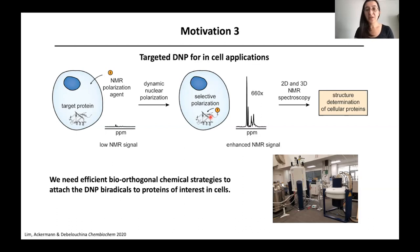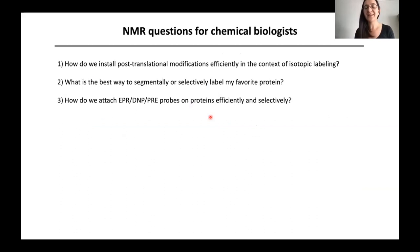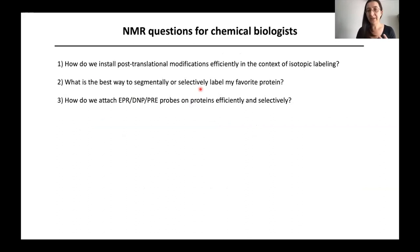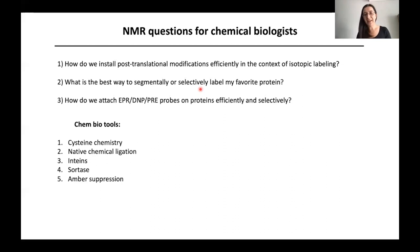As an NMR spectroscopist, I can rephrase these motivations in three questions: How do we install post-translational modifications efficiently in the context of isotopic labeling? What is the best way to segmentally or selectively label a favorite protein? And how do we attach spectroscopic probes — in particular EPR, DNP, or paramagnetic relaxation enhancement probes — on proteins efficiently and selectively? Chemical biologists have tools to answer these questions: cysteine chemistry, native chemical ligation, inteins, sortase, and amber suppression.